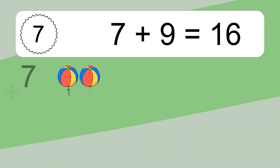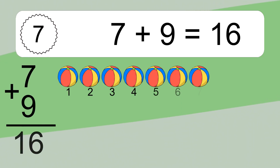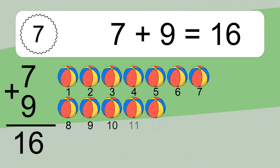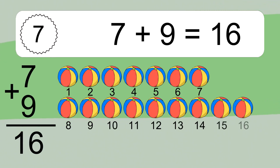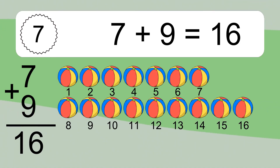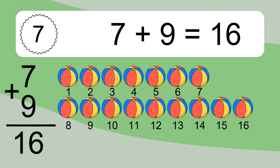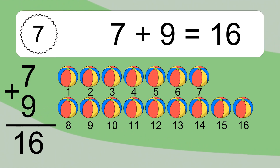Seven plus nine equals sixteen. Let's count it: one, two, three, four, five, six, seven, eight, nine, ten, eleven, twelve.